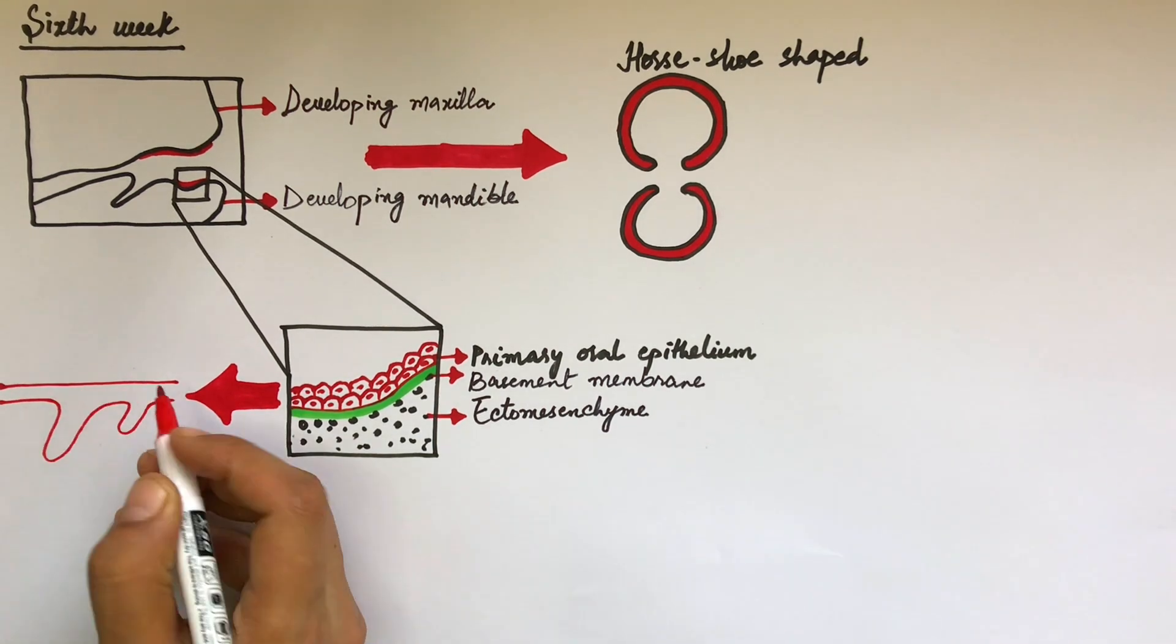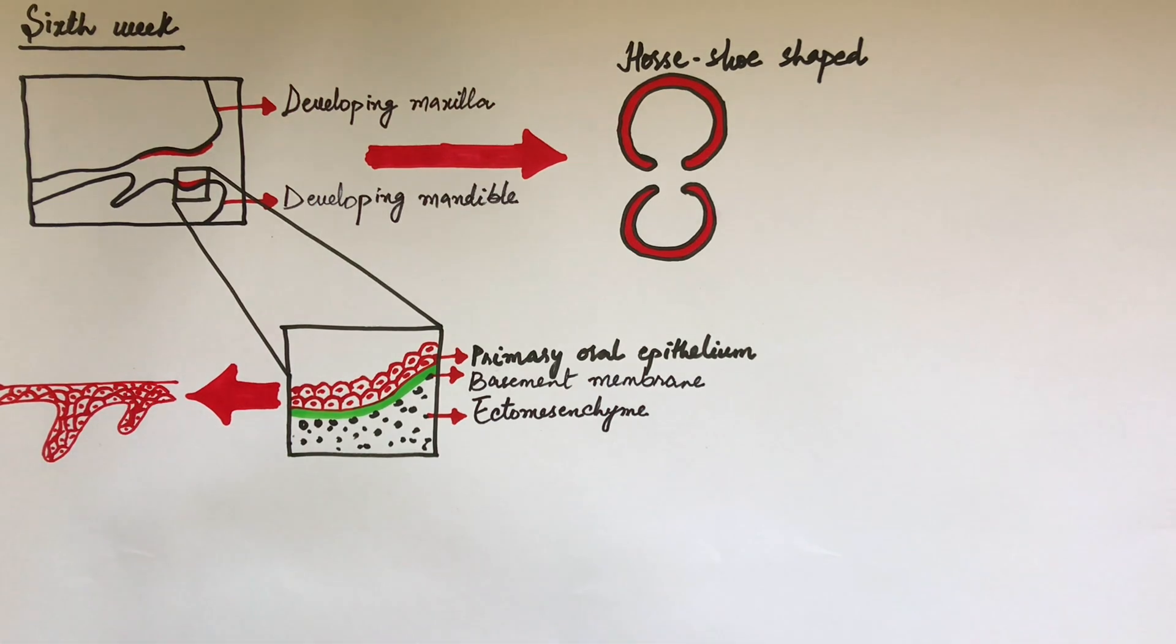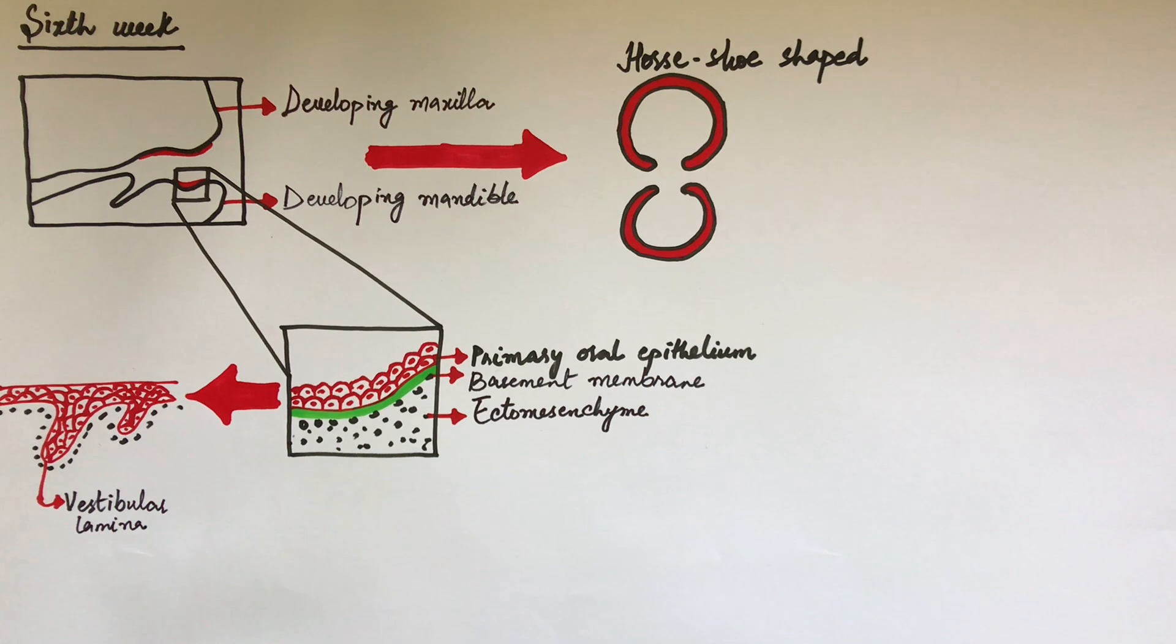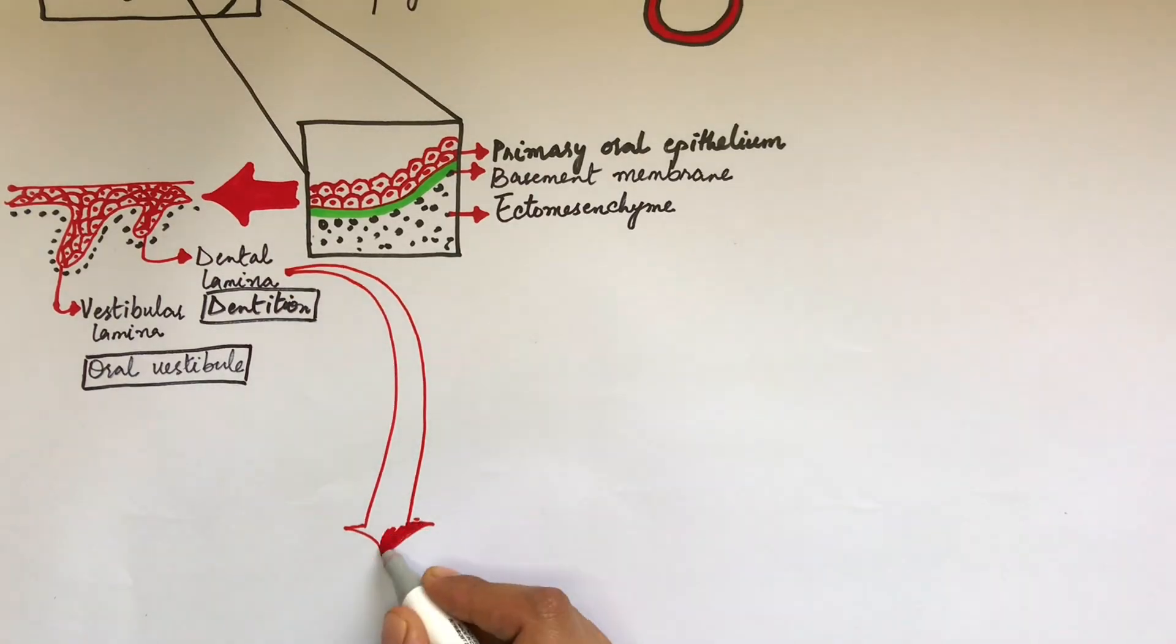As the seventh week arises, the primary oral epithelium will subdivide into vestibular lamina and the dental lamina. The vestibular lamina will give rise to the oral vestibule, while the dental lamina will give rise to the future dentition.